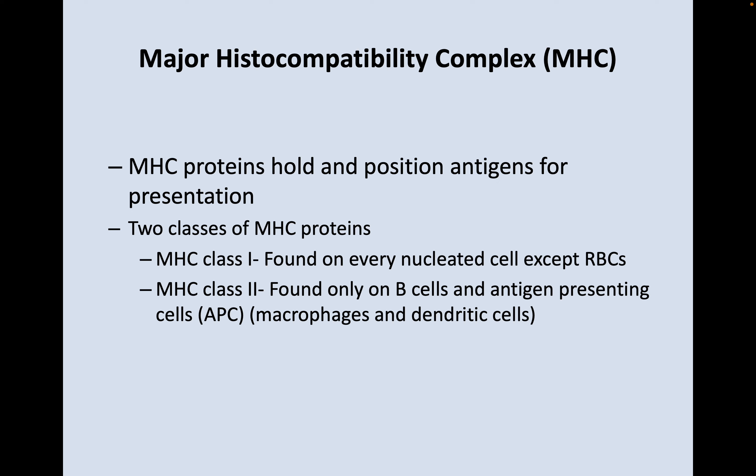An interesting sidebar: the major histocompatibility complex is actually involved in mate selection. A study found that humans are more attracted to mates who have MHC alleles that are different from their own. So we're attracted to people who would give our babies the most diverse and strongest MHC complexes, which is pretty remarkable.